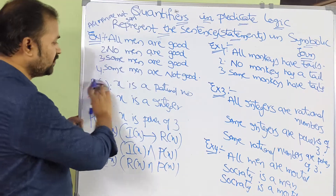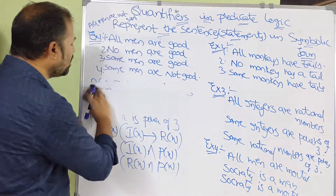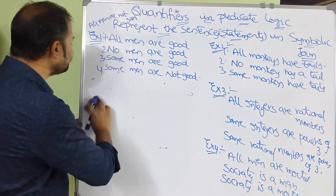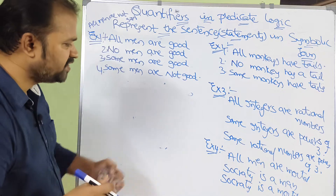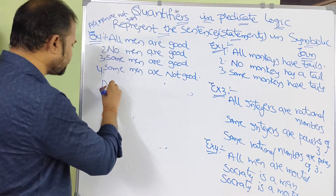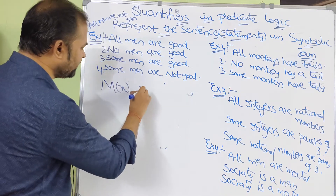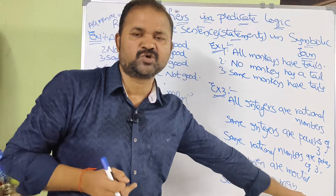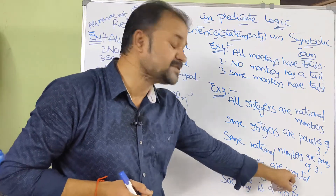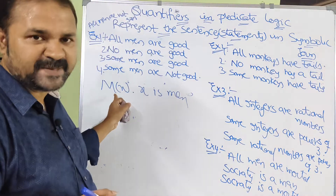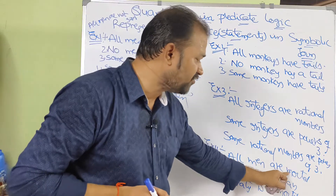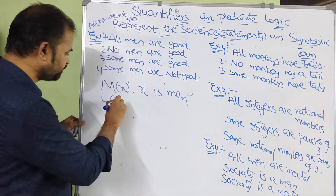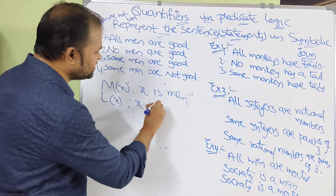Now let us see the fourth example: All men are mortal. Socrates is a man. Socrates is a mortal. For men, we use M(x). For mortal, since mortal begins with M which is already used for men, we use L instead. So L(x) means X is mortal.